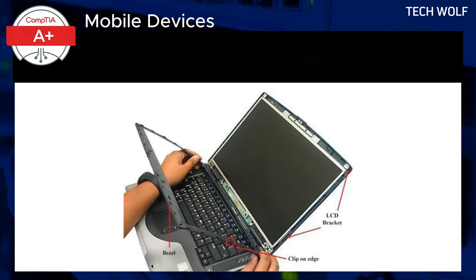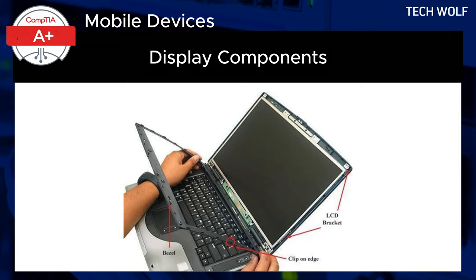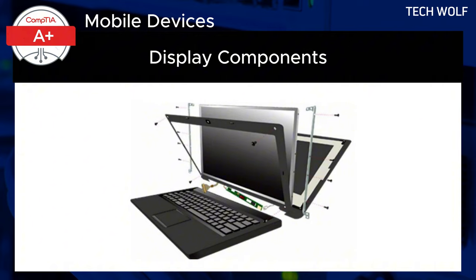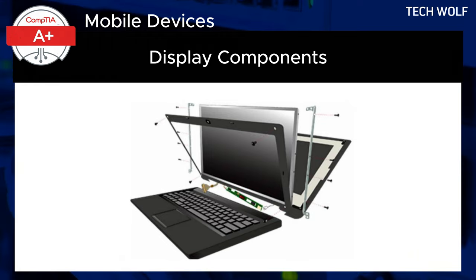In modern mobile devices, the display is a central hub where multiple system components converge, reflecting efficient design to maximize functionality in limited space. This space-saving approach complicates repairs, as tightly packed components require careful disassembly to avoid damage. Technicians must have an intricate understanding of these layouts, ensuring each part is handled with precision.